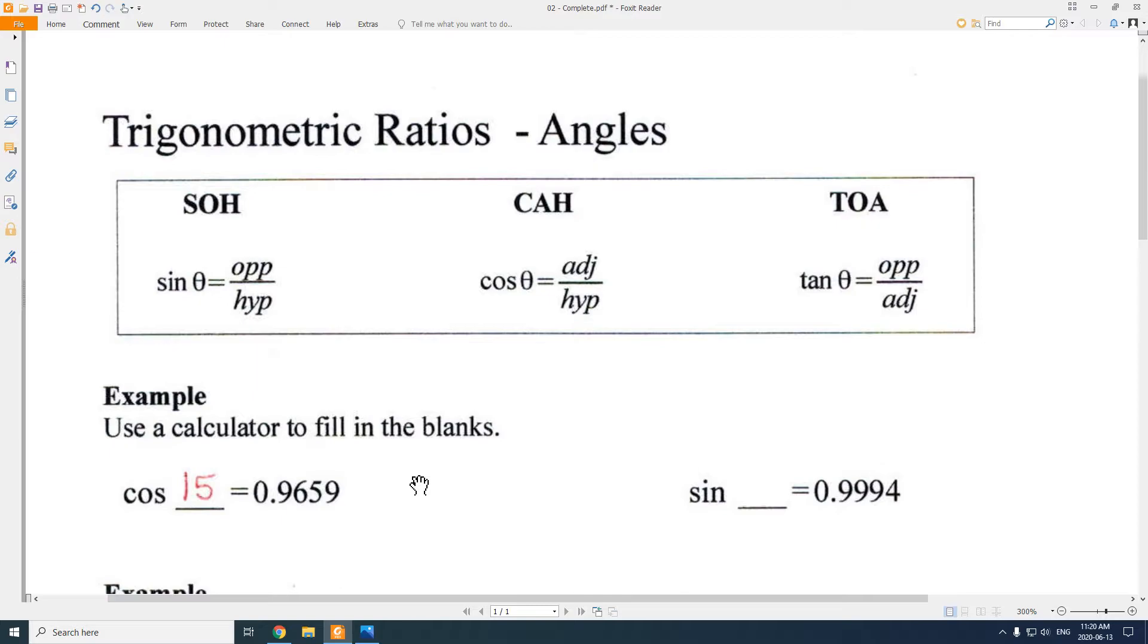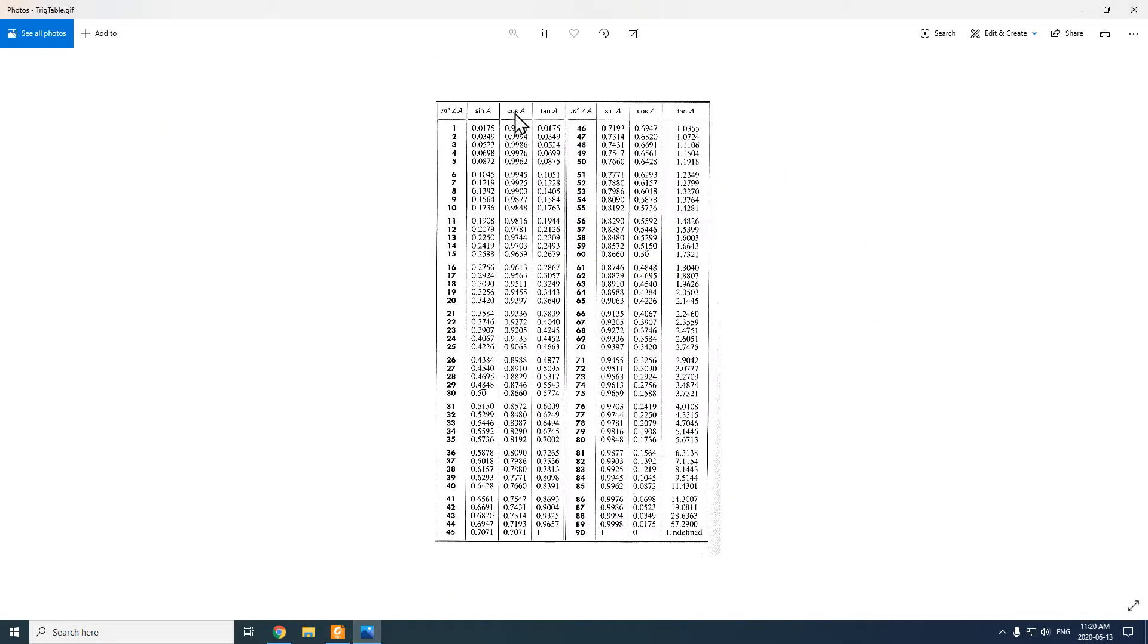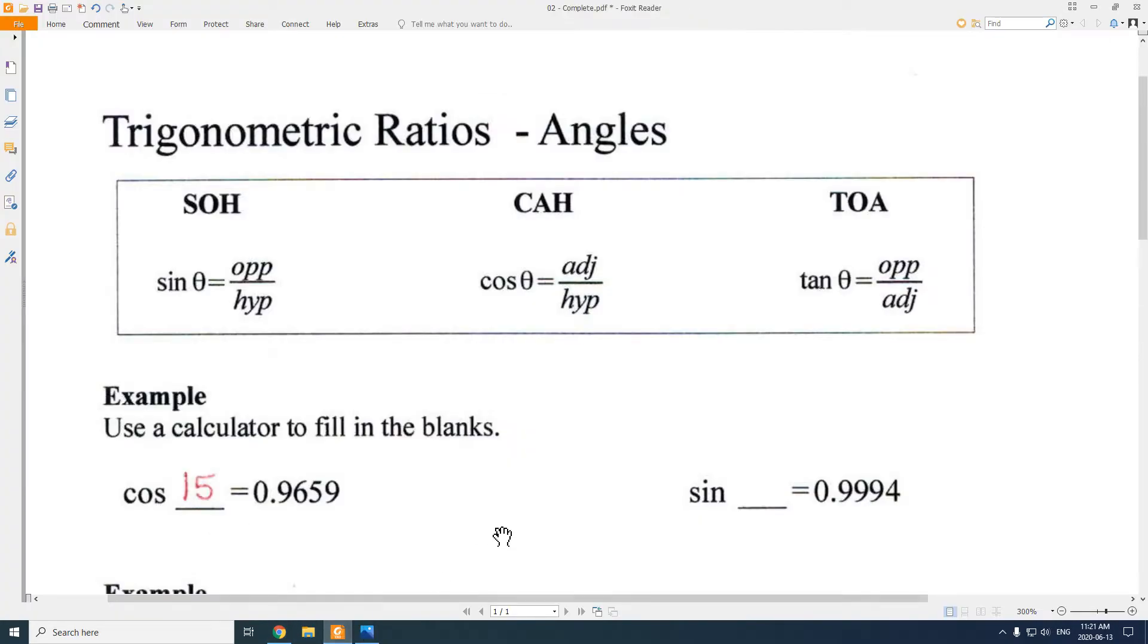Now it gets pretty tedious looking at these tables, especially when you start looking at decimal angles, right? 15.1 or something like that. So you can use your calculator to do it. But when you're doing this on your calculator, all your calculator is doing is it's just looking for that ratio in the table and matching it up with an angle. That cos button in your calculator is not doing anything fancy other than looking things up in a table.